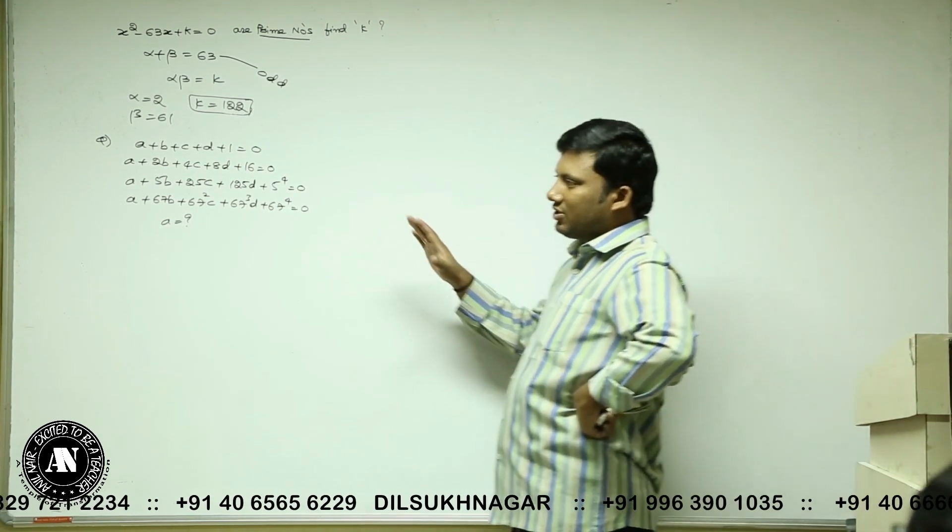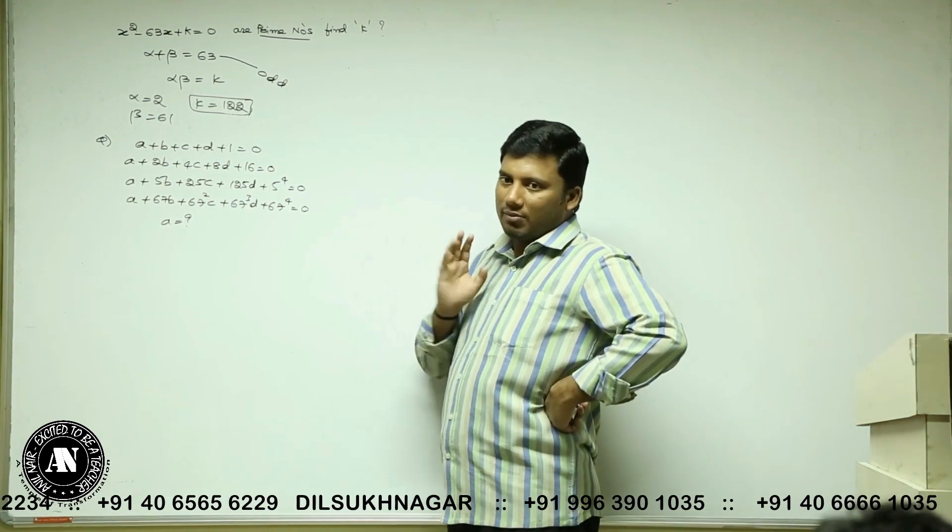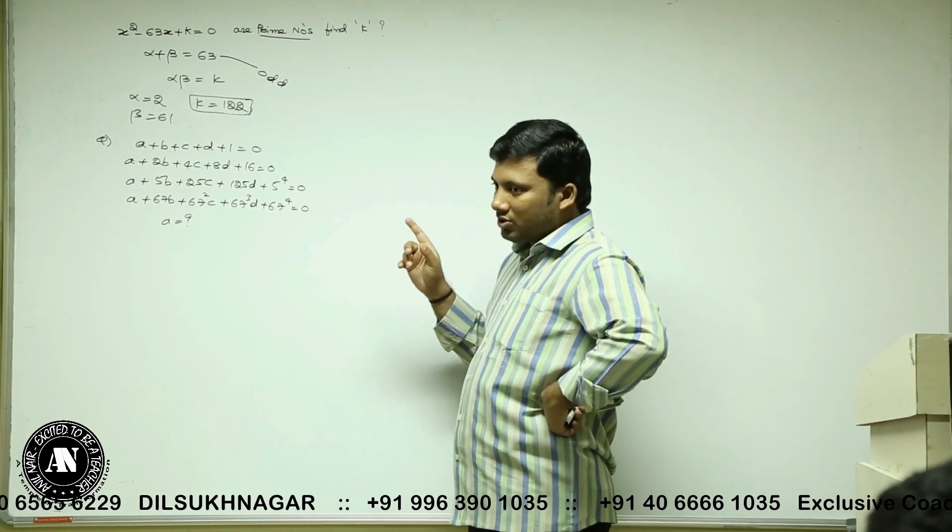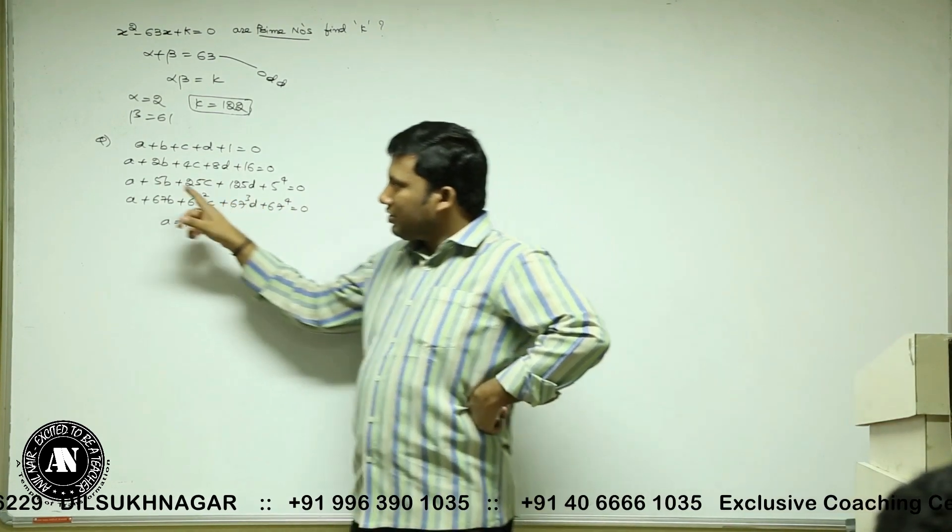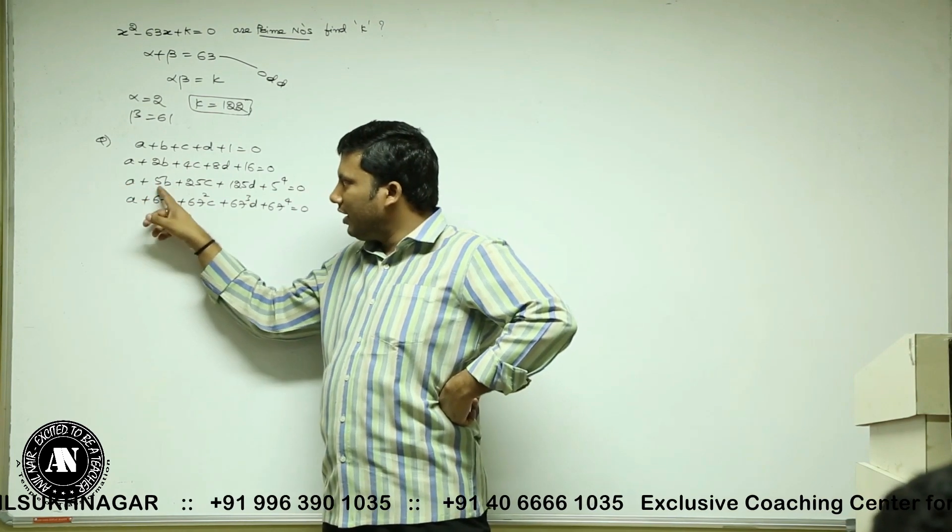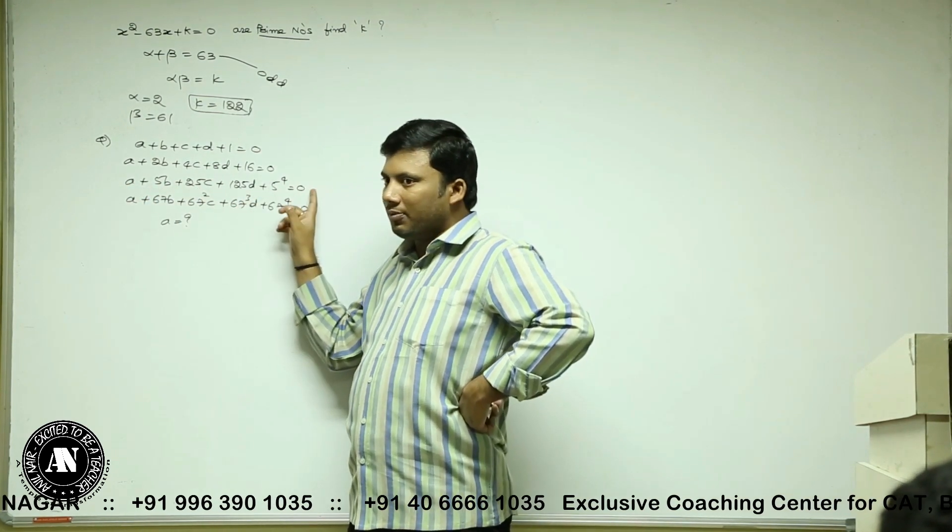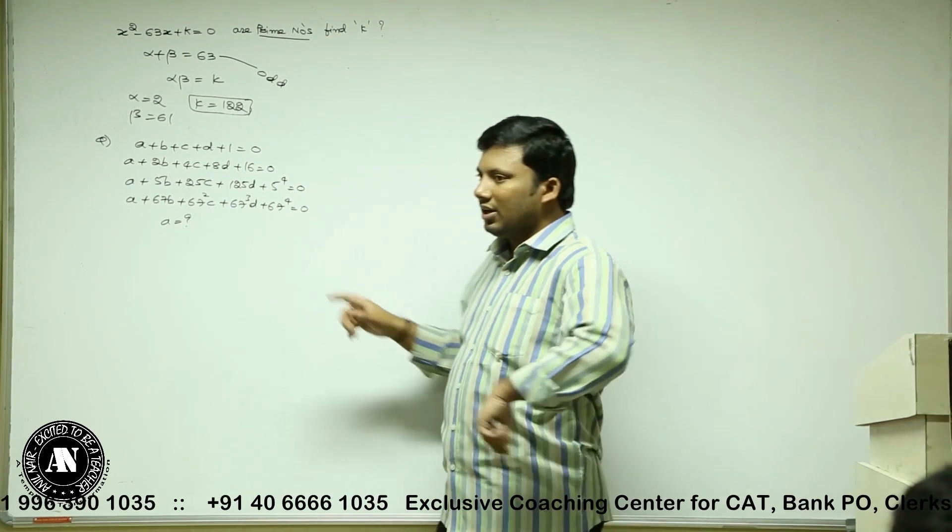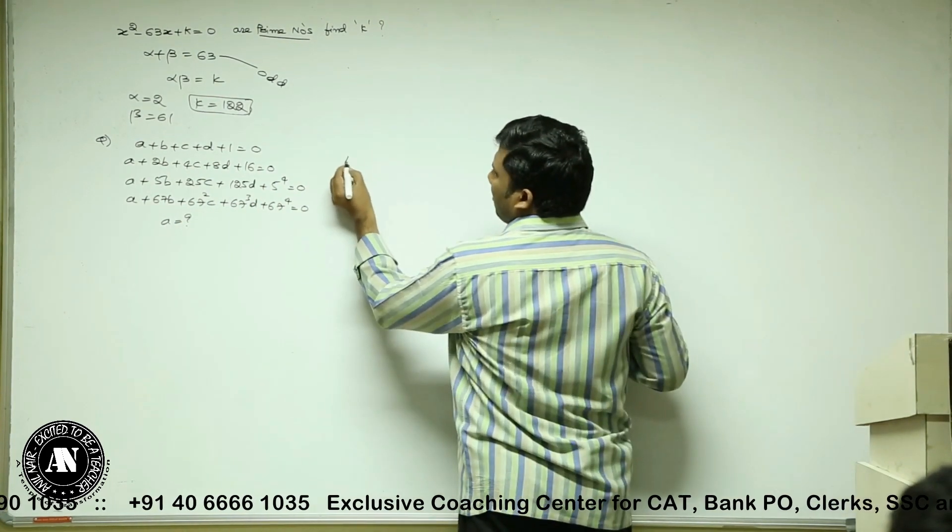This is a little complex equation with how many variables? 4 variables. Now, see here. I hope you understood the coefficient of A is 1. Then 5, 5 squared, 5 cubed, 5 to the power 4. Then 1, 67, 67 squared, 67 cubed. Can I say the generic equation is like this?